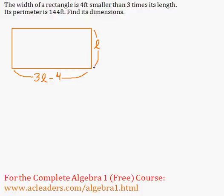We know that the perimeter, which is the sum of all sides of the rectangle, is 144 feet. So the sum of all sides will be 2 lengths, here and there, so 2L plus 2 times the width. And the width is 3L minus 4, so that equals the perimeter, 144.